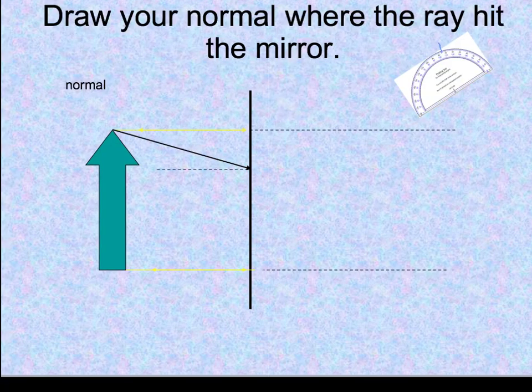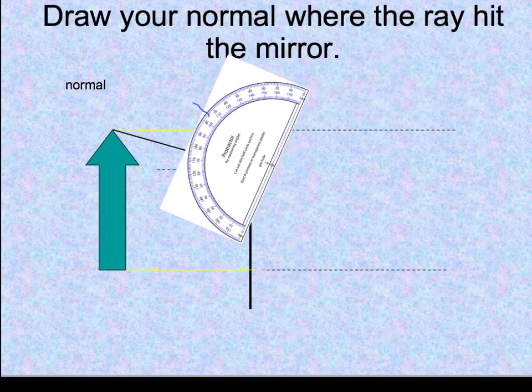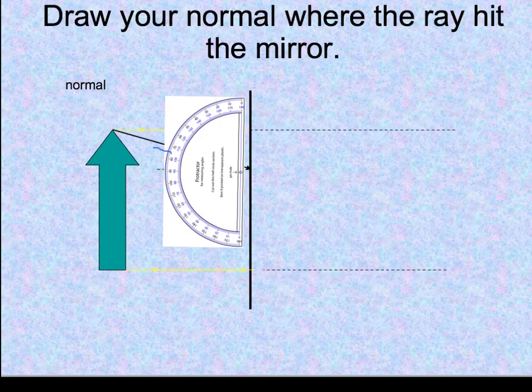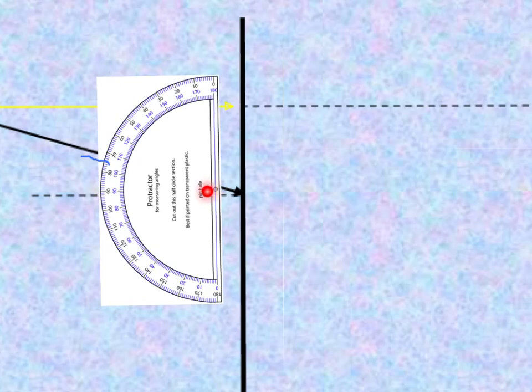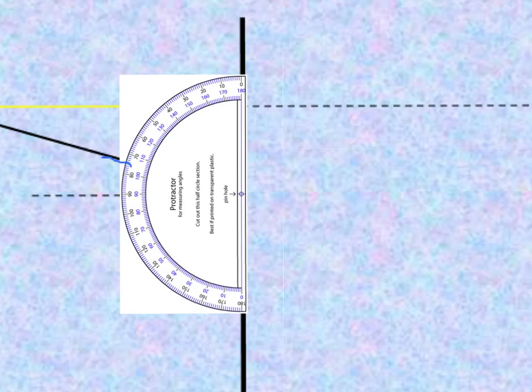Now here's the tricky part. We need to draw the normal, and the normal is a line perpendicular. So you actually have to use your protractor to measure that normal. You've got this part of the protractor here with a little dot on it. You want to line that little dot up with where your ray hits the mirror. And then you want to line up the line on the protractor with the line that's the mirror. You want to line those up with the mirror, and then your normal is going to be right here at 90 degrees.